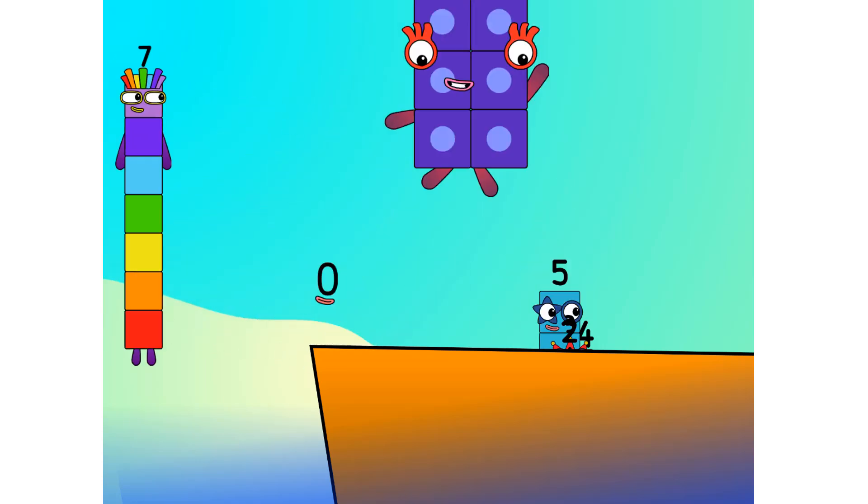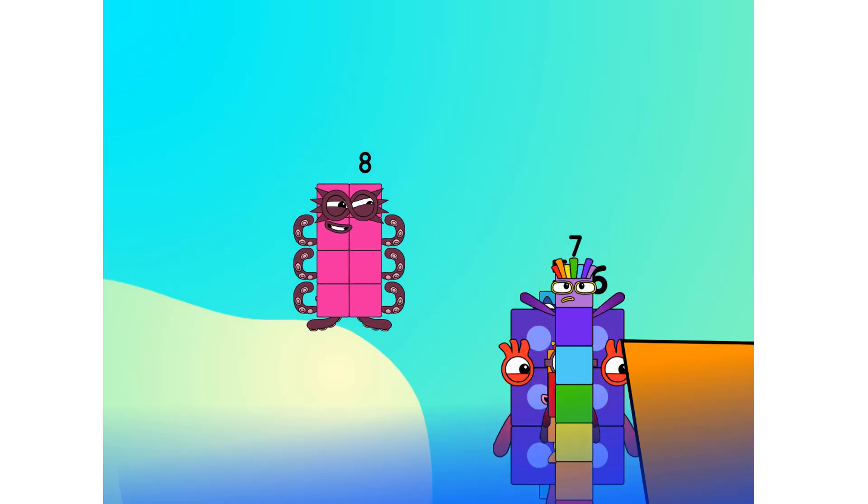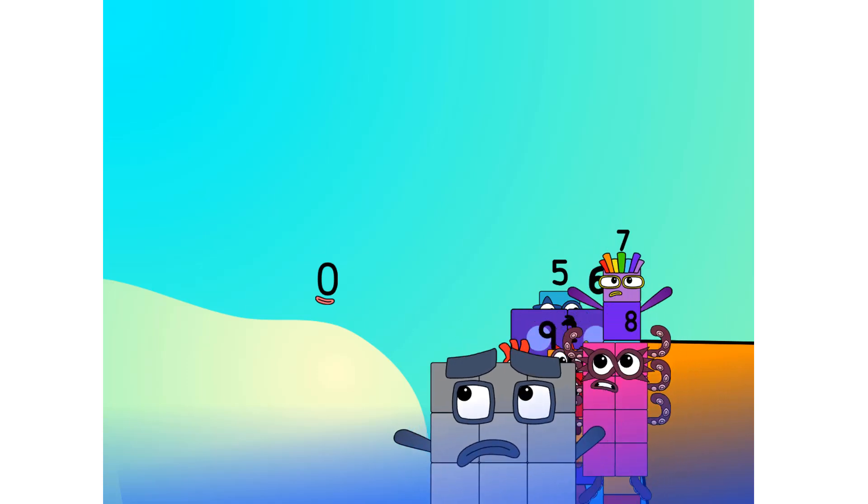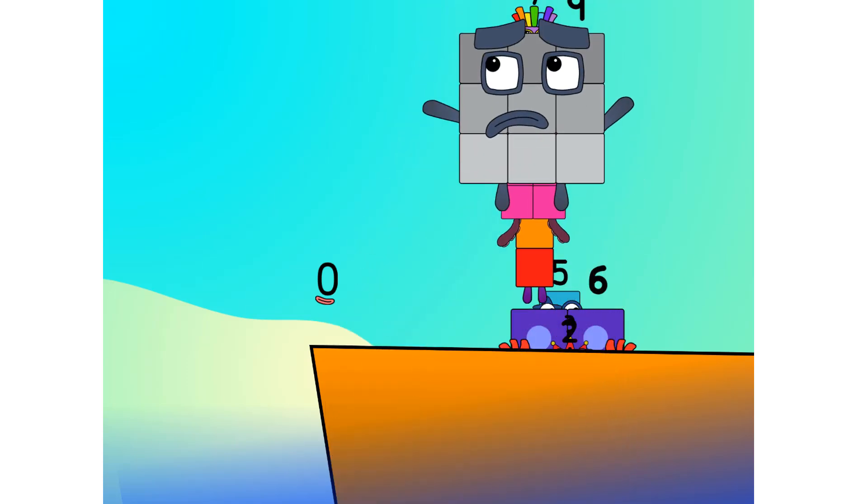Alright me hearties, into the boat you go. I have room for 12. One million numbers. Number one, two, move along lads. Three, four, five, six, seven. Step lively. Eight. Smartly now, move along. Nine. Blow me down, numbers overboard! Hang on lads, it's a good thing you know how to swim.